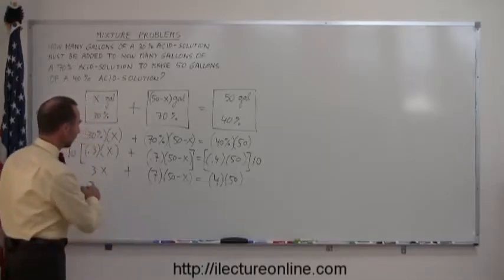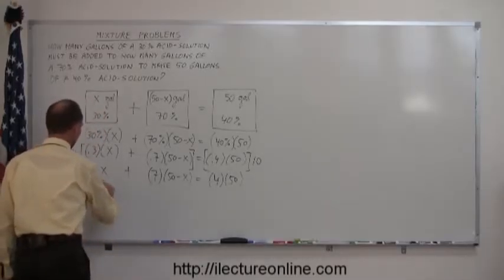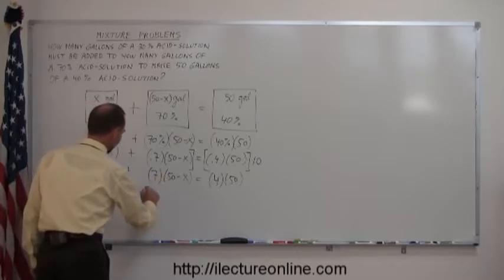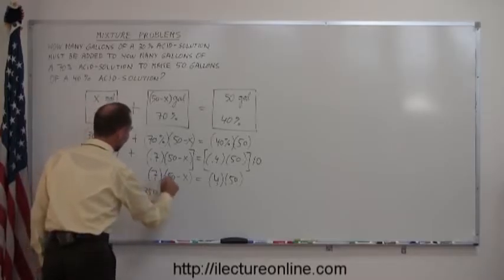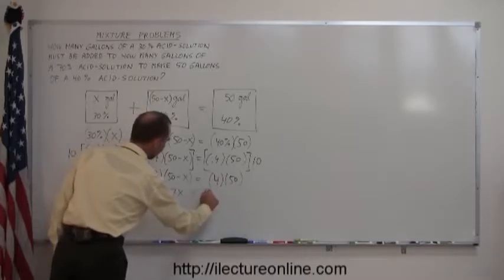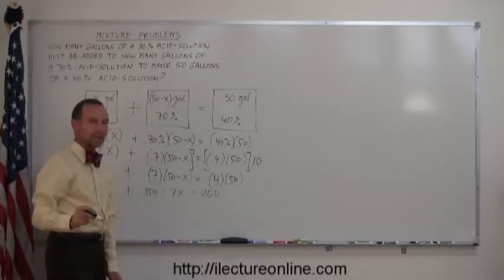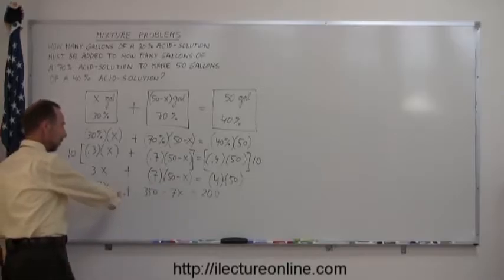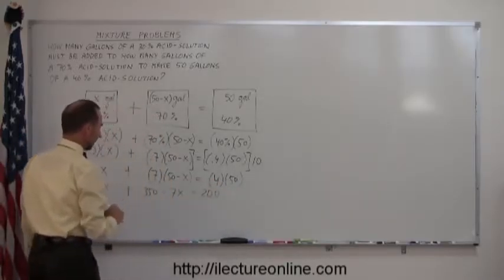So, we have 3x plus 7 times 50 is 350, 7 times minus x is minus 7x, equals 4 times 50 is 200. And, of course, what we do here is we move all the terms with the x to the left side, all the terms that don't have an x to the right side.